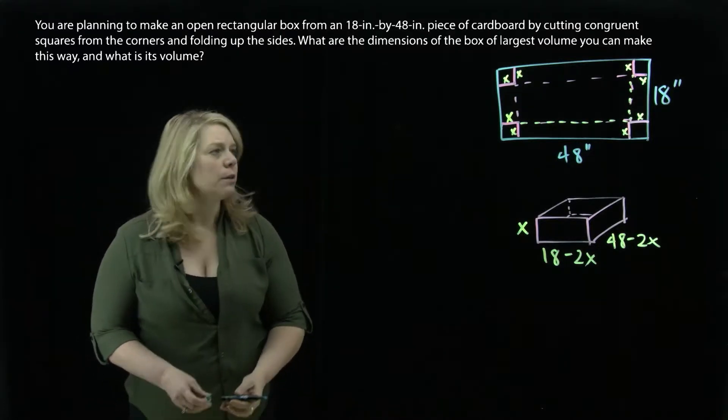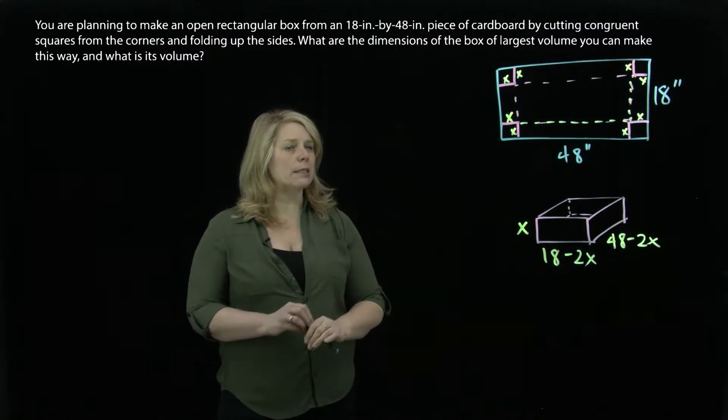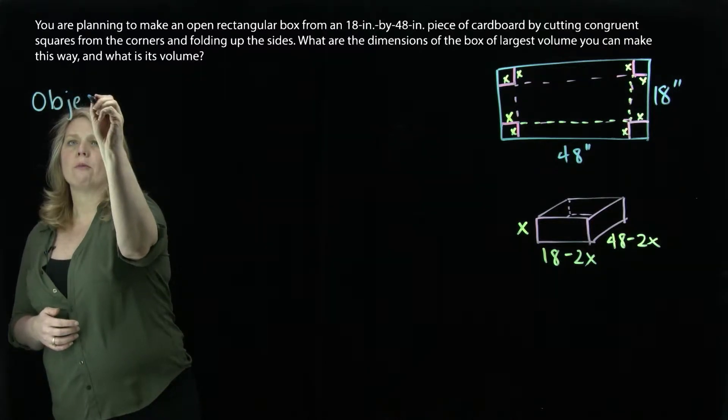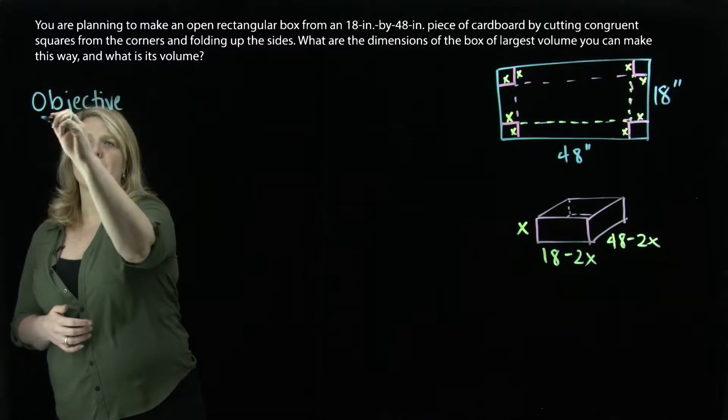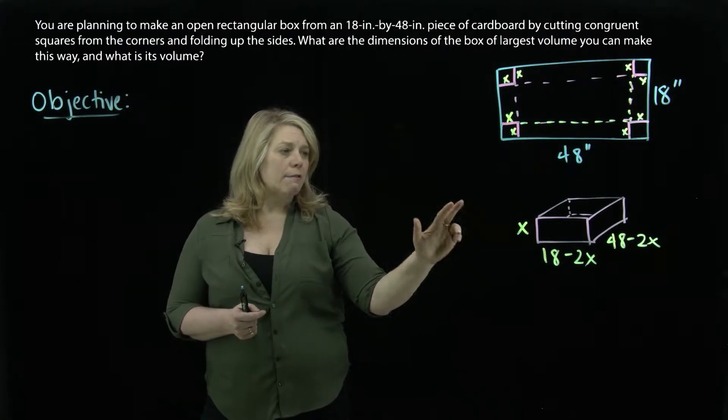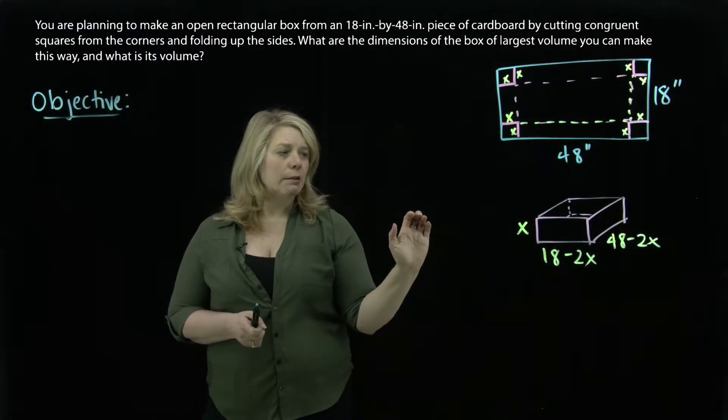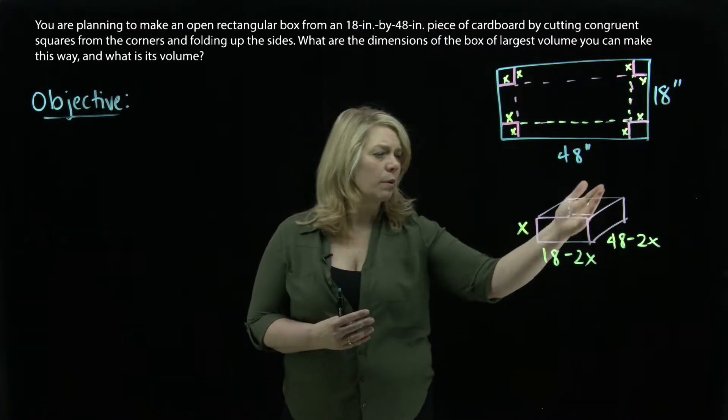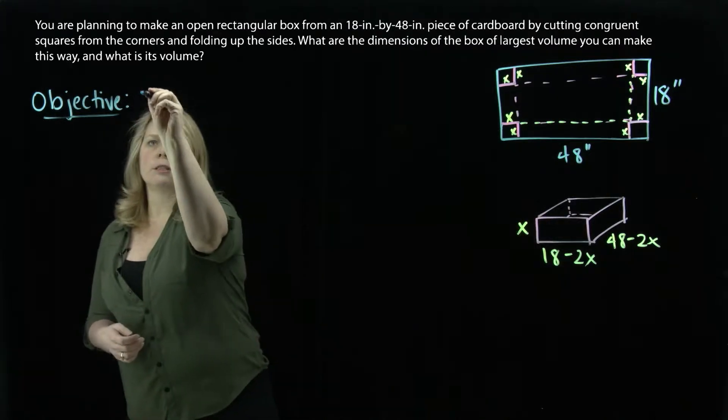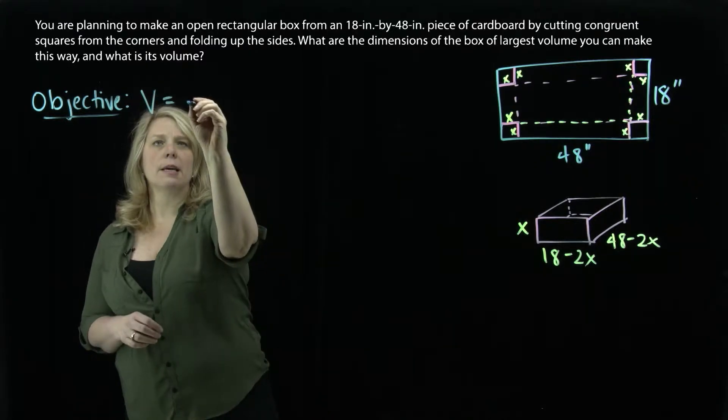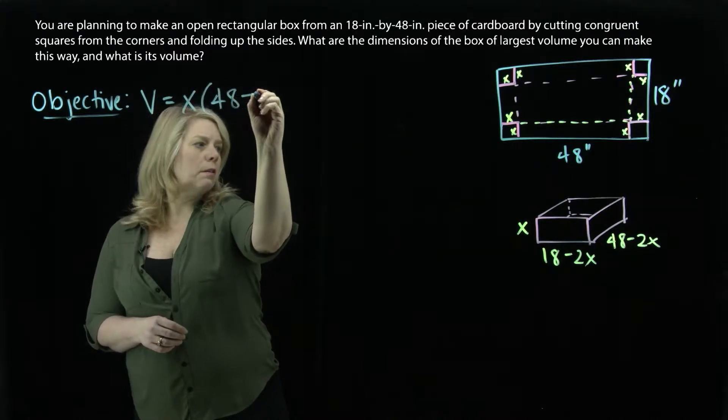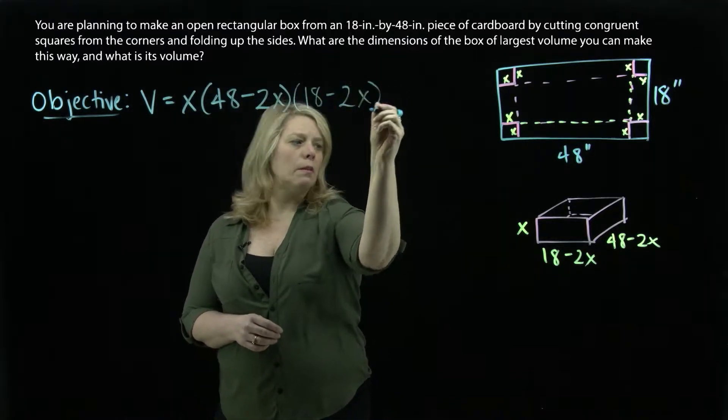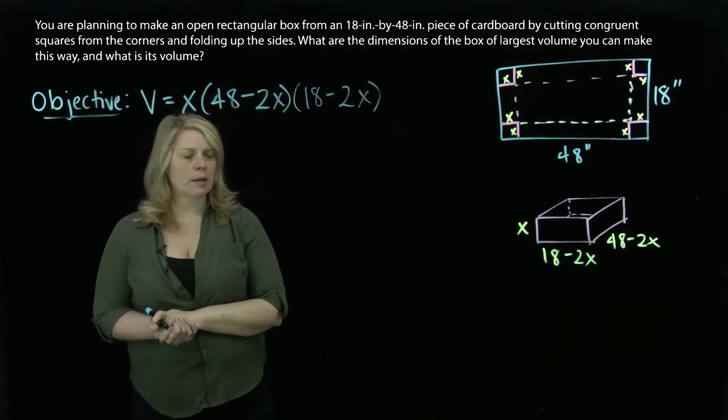Another thing that we always want to do at the beginning of these problems is think about our objective function. The objective function is about what you want to maximize or minimize. We want to maximize the volume of this box. So I need to write a formula that gives the volume. Volume of a box is length times width times height, so just the product of all those things. I'll put the x out front. So there's our volume equation.